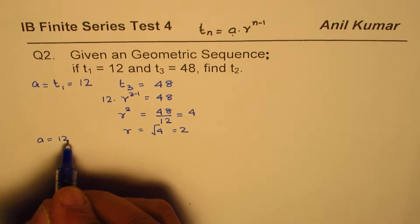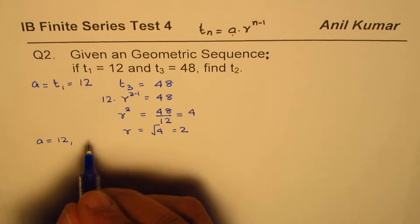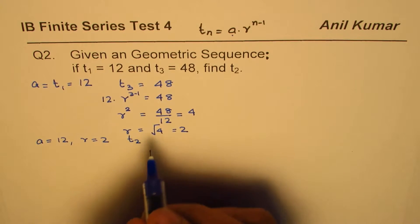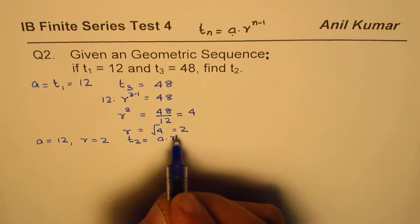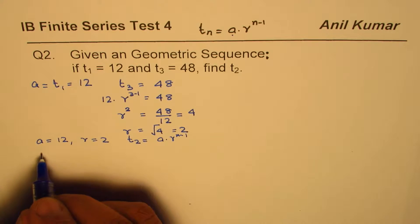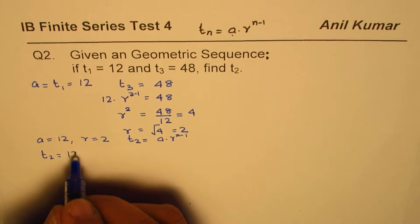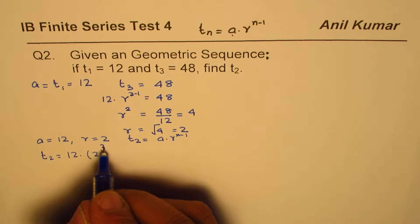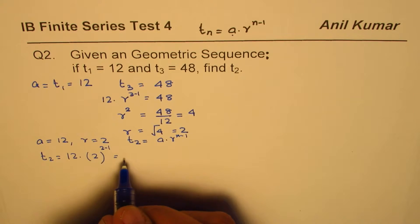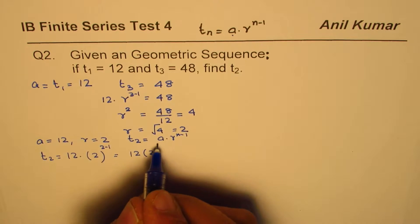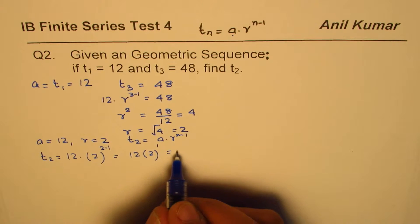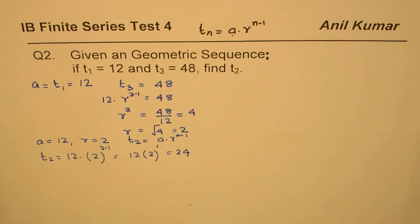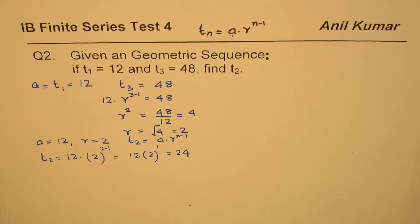Now we know a is 12 and r is 2. We need to find t2. Using the formula, t2 equals a times r to the power of n minus 1, so t2 equals 12 times 2 to the power of 2 minus 1, which is 12 times 2 to the power of 1, giving us 12 times 2 equals 24. So t2 is 24.